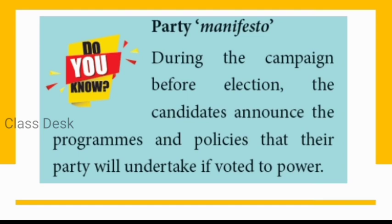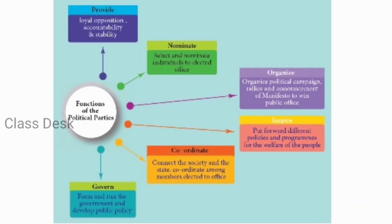The functions of political parties include: first, they provide accountability and stability and means of information. They nominate candidates for elections. They organize a number of campaigns and rallies, and announce their manifesto to win public office. They inspire the public by putting forward policies and programs for the welfare of the people. They coordinate between the society, the state, and elected members, and finally, once they come to power, they govern the state.